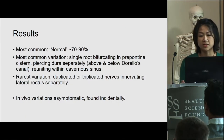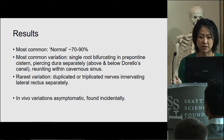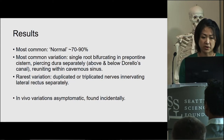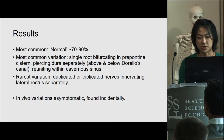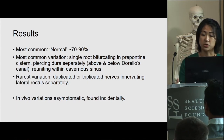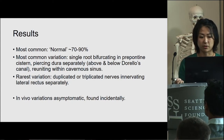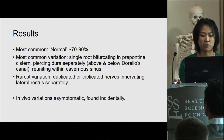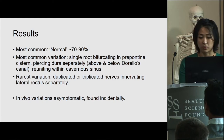The results show that the most common is the normal pathway, ranging from 70% to 90%. If there is a variation, the most common is a single root bifurcating in the prepontine cistern, piercing the dura separately — usually above and below Dorello's canal — and reuniting within the cavernous sinus. The rarest variation is a duplicated or triplicated nerve innervating the lateral rectus separately. The in vivo variations found in the literature have been asymptomatic and found only incidentally.